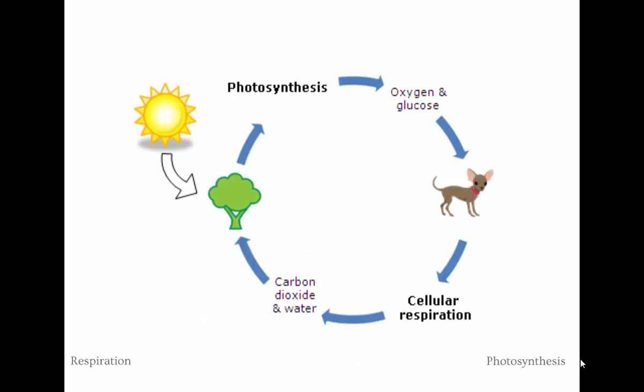Photosynthesis and respiration are cycles. Photosynthesis releases oxygen and produces glucose. We don't produce our own glucose — we get it by eating. Our body transforms the foods we eat into glucose, which goes to our cells where respiration happens. We use that glucose and produce carbon dioxide and water, which plants then use in photosynthesis. They produce what we need; we produce what they need. It's a repeating cycle.